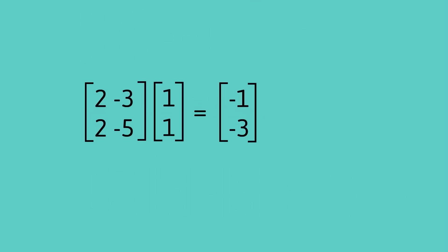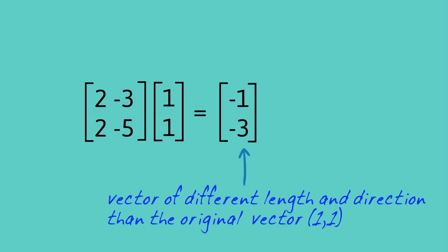You can see in this example that I've multiplied the vector [1,1] by the given matrix and we end up with a vector that is a different length and, importantly, a different direction to the vector that we started with.